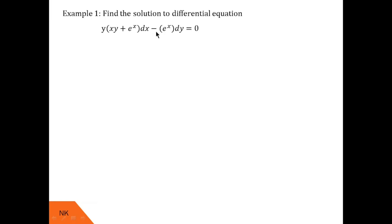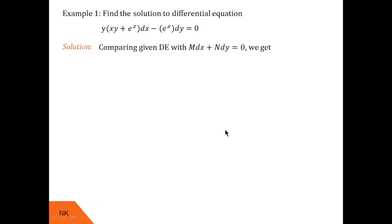The question is to find the solution to the differential equation y(xy + eˣ) dx − eˣ dy = 0. First of all, we will check whether the given differential equation is exact or not. We compare it with M dx + N dy = 0, and we see M = y(xy + eˣ) and N = −eˣ.